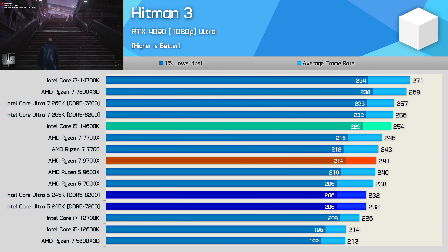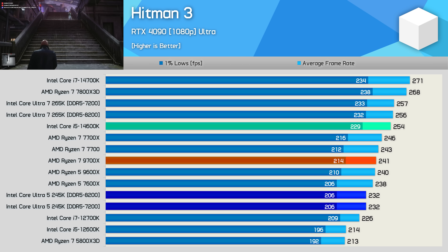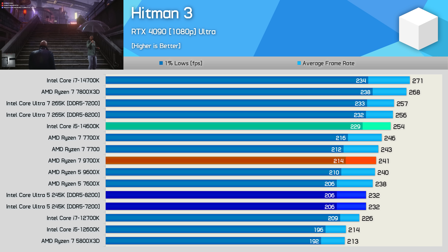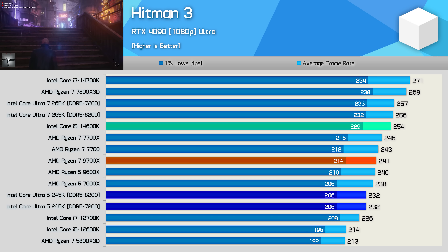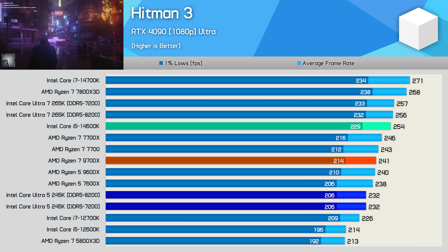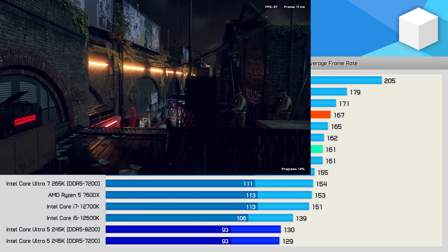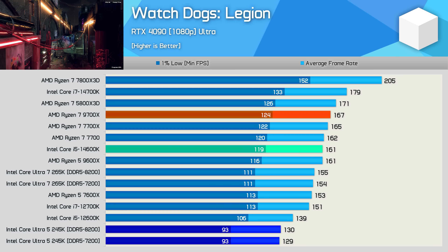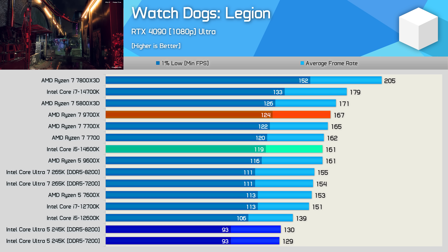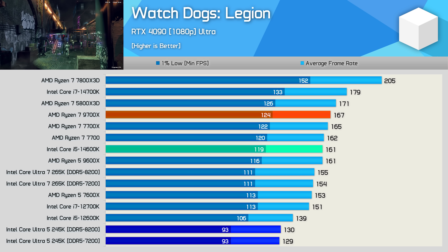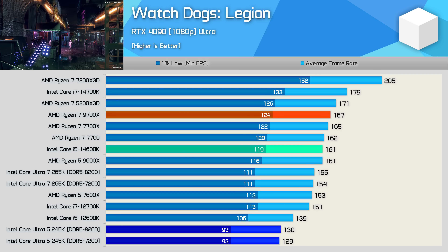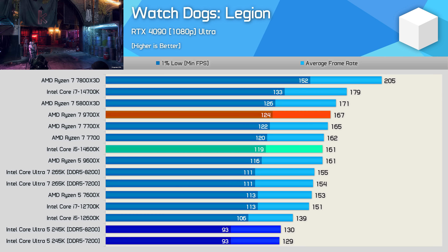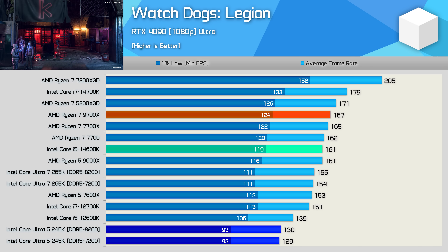Hitman 3 has traditionally been a strong title for Intel, but not with Arrow Lake — the 245K was 9% slower than the 14600K and 4% slower than the 9700X. Watch Dogs Legion is even worse; the 245K comes in dead last by a significant margin, losing to the 14600K by 20% and the 9700X by 23%. These results are clearly very bad.